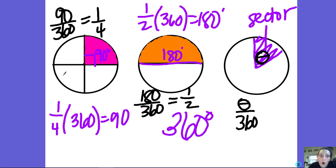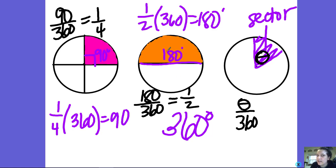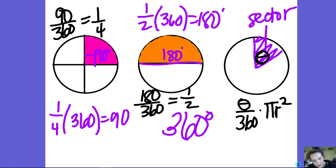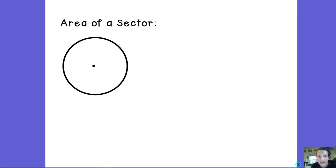If I know the whole entire area of the circle — because I can just do pi r squared — and I really just want to find this pink area, since that angle is 90, that's a fourth of the circle, so I would just take the whole area and find one-fourth of it. Or if I wanted to find just this orange area, since it's half a circle, it's just half of the total area. So to find the area of a sector, you put the angle over 360 and find that portion of the area of the circle.